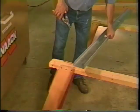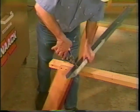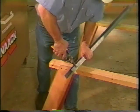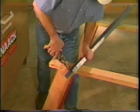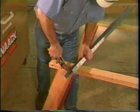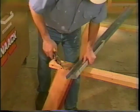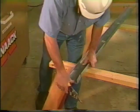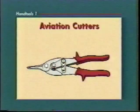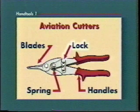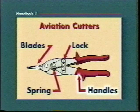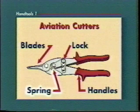Use a pair of aviation cutters to make straight or curved cuts in light gauge metal studs, flashing, ductwork, or other light sheet metal material. Aviation cutters have four main parts: the blades, the lock, the handles, and the spring.